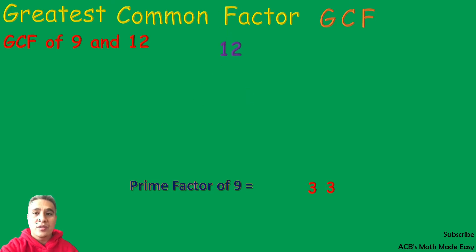We are going to factor out 12. 12 can be factored out by 3 times 4. 4 is not a prime number, and we can still factor it out.